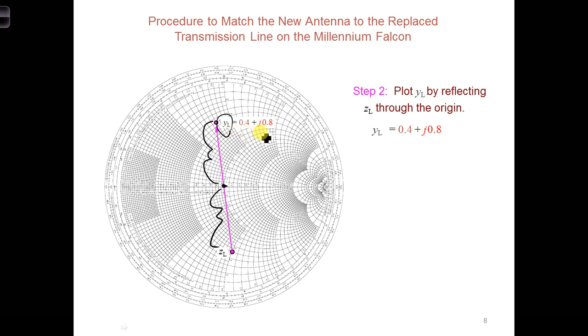So here we got 0.4 plus j0.8, and that's because y_L goes through about the 0.4 circle and the positive 0.8 arc.